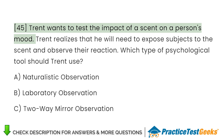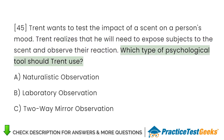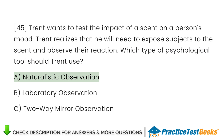Trent wants to test the impact of a scent on a person's mood. Trent realizes that he will need to expose subjects to the scent and observe their reaction. Which type of psychological tool should Trent use? A. Naturalistic observation